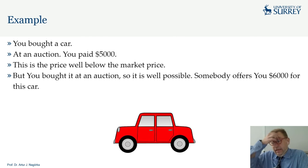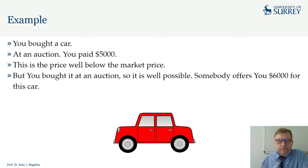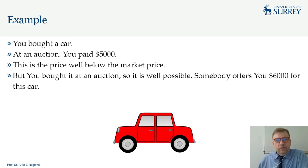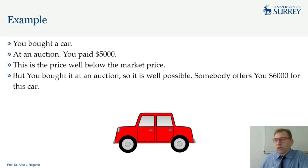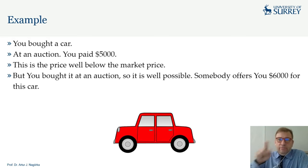We have a classic example found in almost every textbook. You bought a car at an auction where anyone could bid — you paid $5,000, which is below the market price. At auctions, when something is sold forcefully, this can happen. You paid, in these particular circumstances, below the market price.